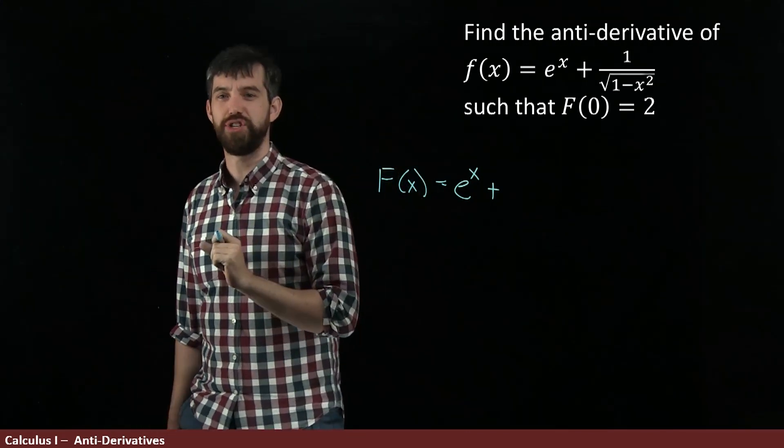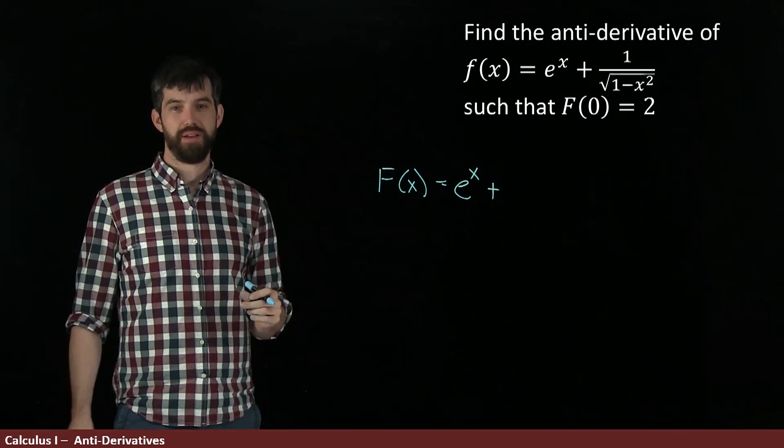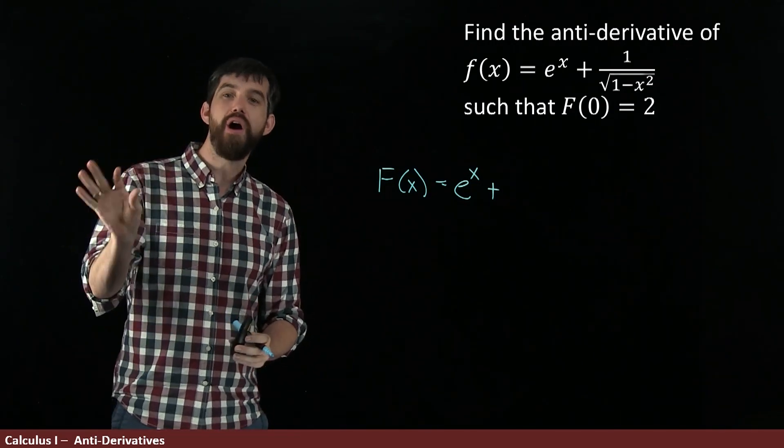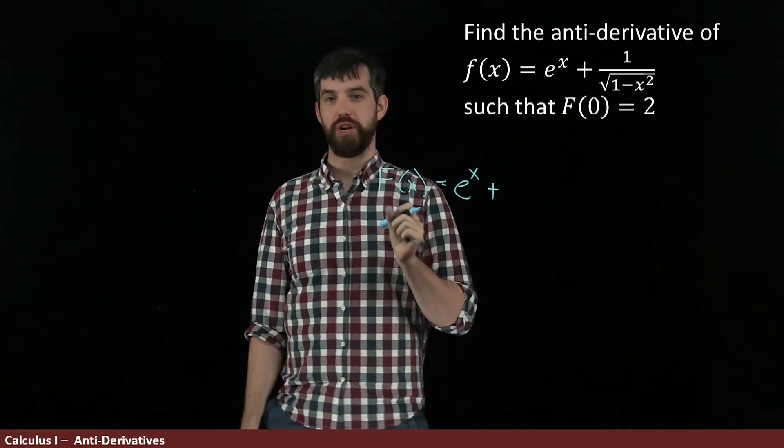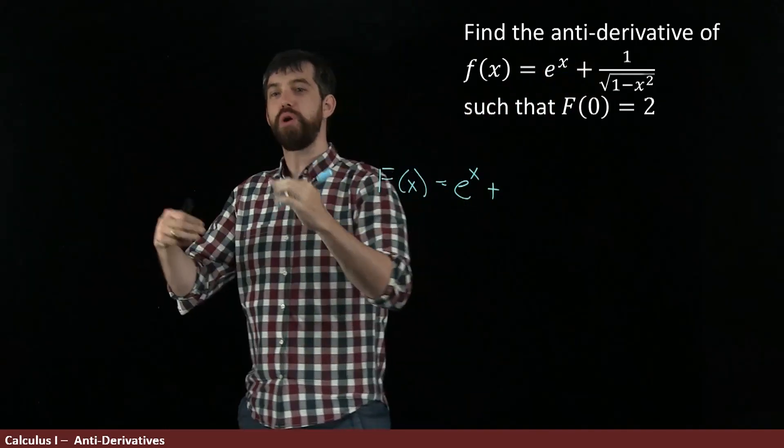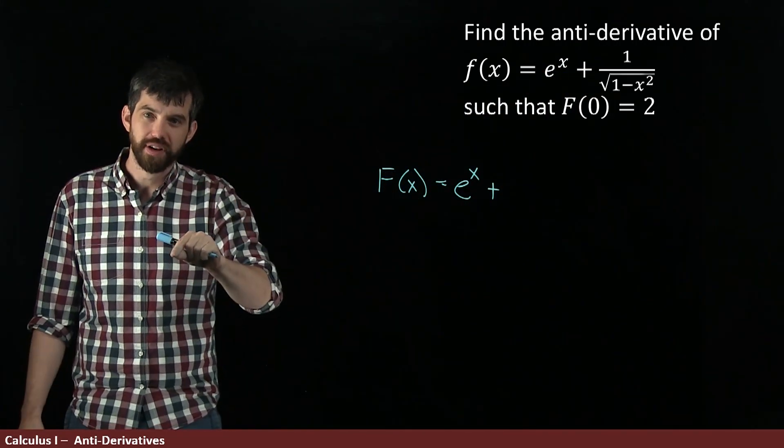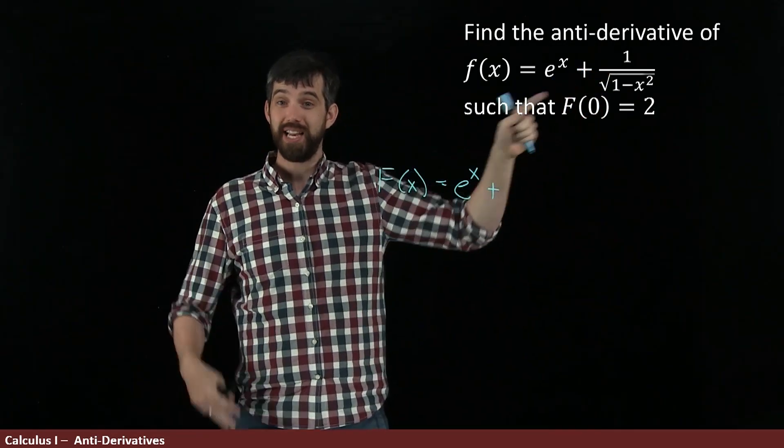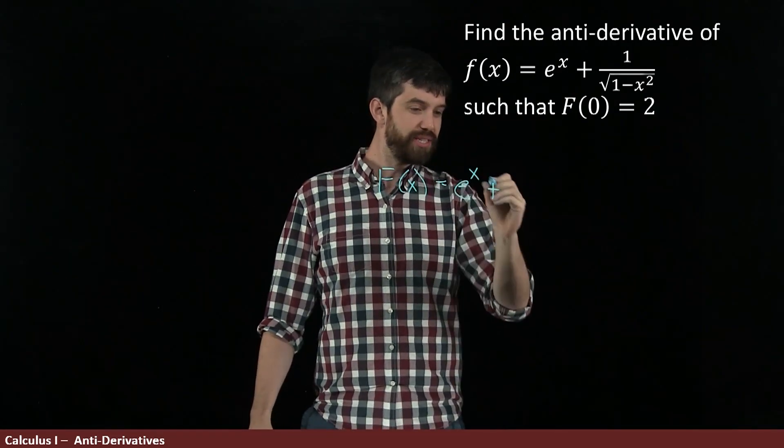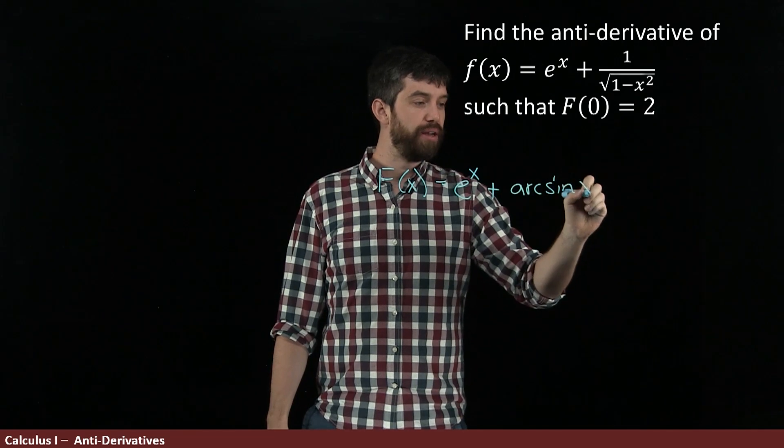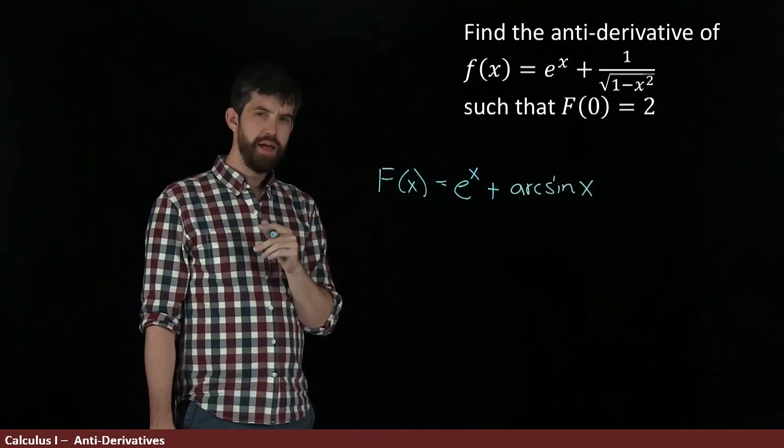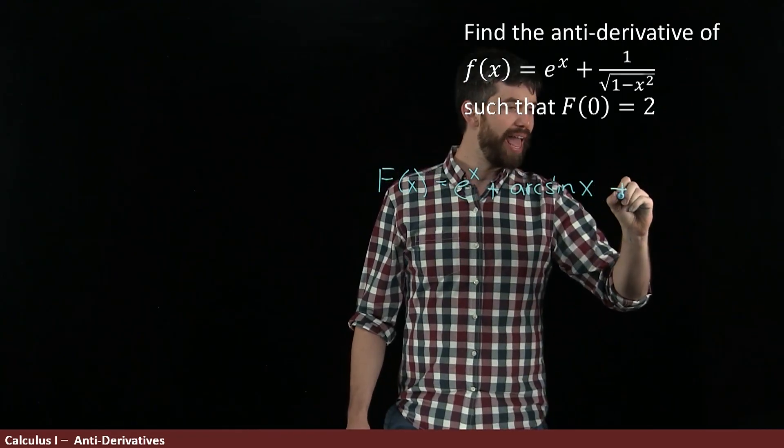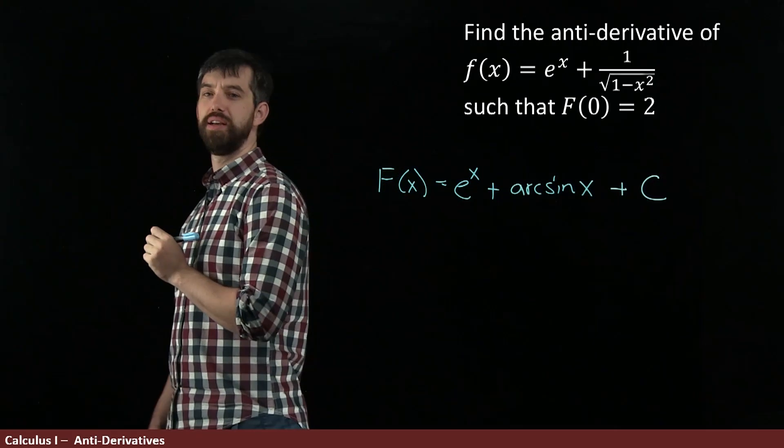Now, this is mainly a question of being able to recognize something. Indeed, you might recall that the derivative of arcsine is exactly this expression. In other words, 1 over the square root of 1 minus x squared is exactly the derivative of arcsine. And therefore, the antiderivative of this thing is just going to be arcsine as well. So this is e^x plus arcsine(x). And then finally, for the general antiderivative, I'm going to add in that plus C that we have not yet determined.